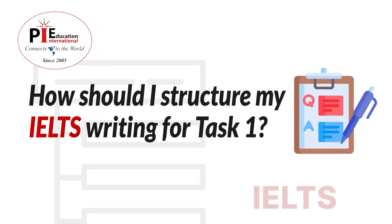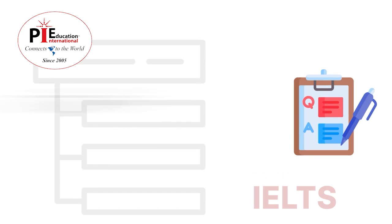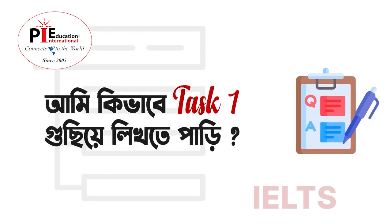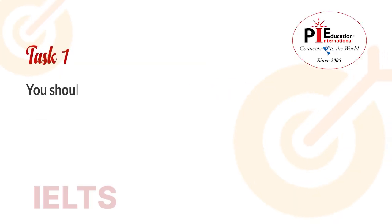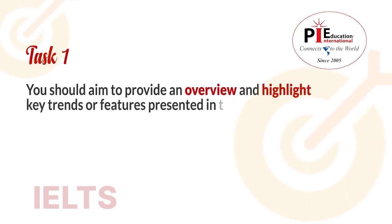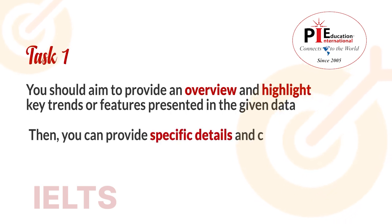How should I structure my writing for Task 1? For Task 1, you should aim to provide an overview and highlight key trends or features presented in the given data. Then you can provide specific details and comparisons as necessary.